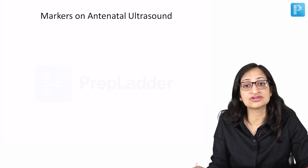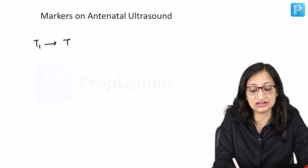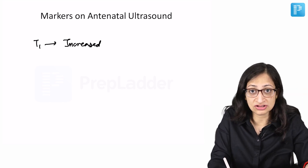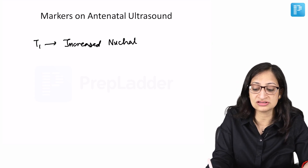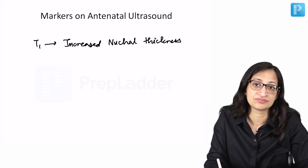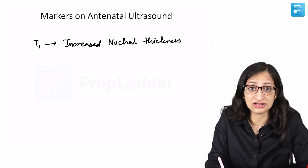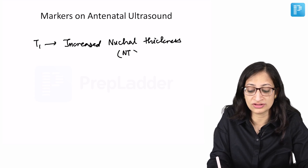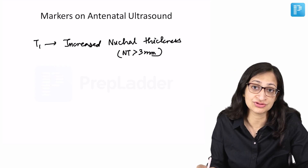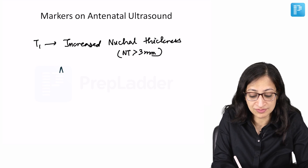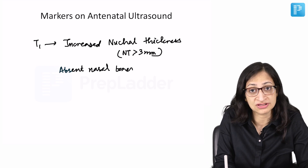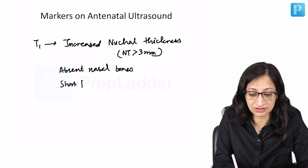Markers on antenatal ultrasound include: as early as the first trimester, you can get increased nuchal thickness — increased thickness of the area around the neck of the baby — more than 3 mm is suggestive of an abnormality like Down syndrome. Apart from that, there can be absent nasal bones and short femur, which also give some clues, though they are nonspecific. Congenital heart disease may also be detected.